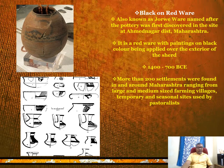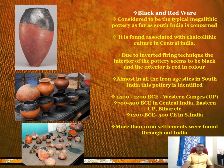Black-on-Red Ware is a culture where black color painting is executed on the exterior portion of red pottery. It is also called Jorwe culture, named after the pottery first discovered at a site in Ahmadnagar district in Maharashtra. The date for this pottery is given as 1400 to 700 BC.